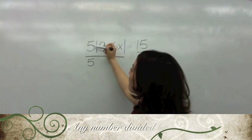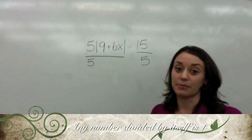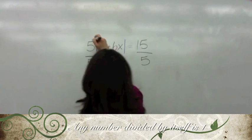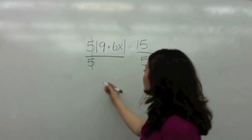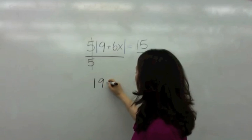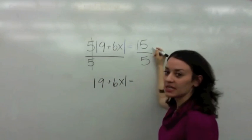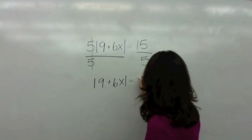And what happens when you have five divided by five, any number that is the same at the top as the bottom, it becomes one. That's right, becomes one. Okay, and you are left with the absolute value of nine plus six X. And what is 15 divided by five? Three. Very good.